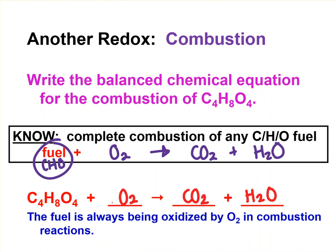We check its balancing last because we can put any number we need to in front of O2 and not affect the carbon and hydrogen. So we do carbon first.